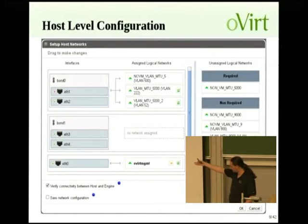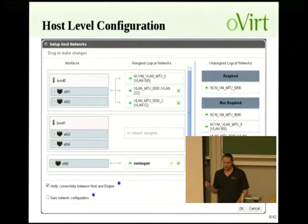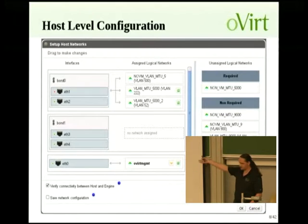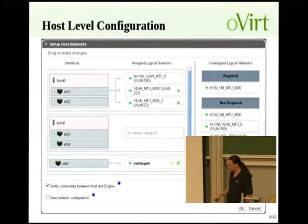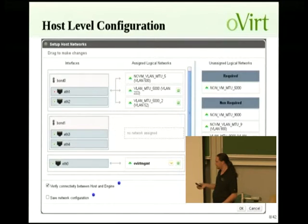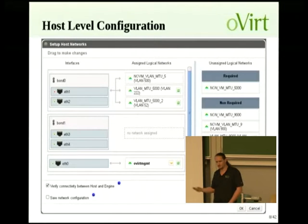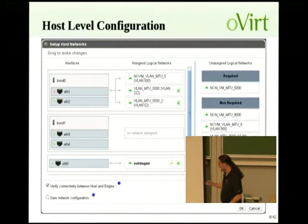On the right-hand side, you have the logical networks that you need to put on the host. Required ones have to be on the host for it to be able to run VMs in that cluster. Non-required networks don't have to be applied. In the middle, you see where these networks are dragged — each network can be attached to a specific interface. There's also a check connectivity option: if you lost connectivity, the host will roll back its network configuration to a working state.